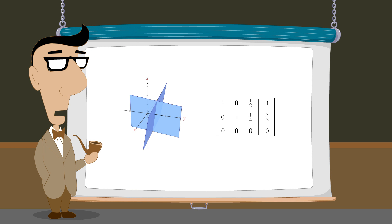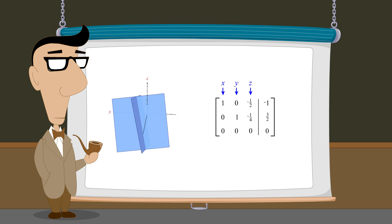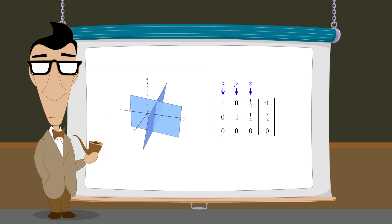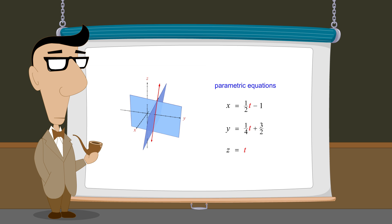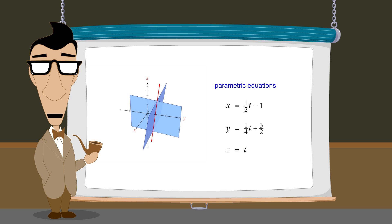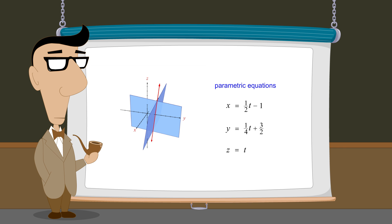In the first example, the system of equations contained three variables x, y, and z, so the system was graphically represented in three dimensions. However, the solution set of the system corresponded to a one-dimensional line. Since the solution was one-dimensional, its parametric representation required only a single parameter t. As this parameter t varies from negative infinity to positive infinity, each unique value of t produces a unique set of values for x, y, and z. Each set of values is one solution of the system, corresponding to one point on the line.